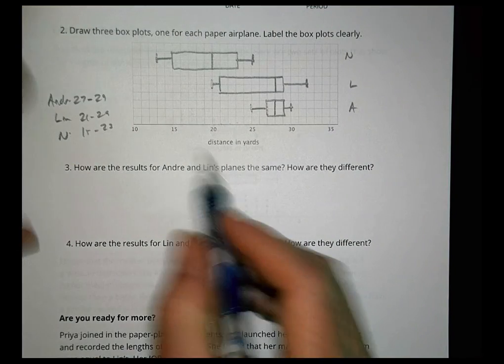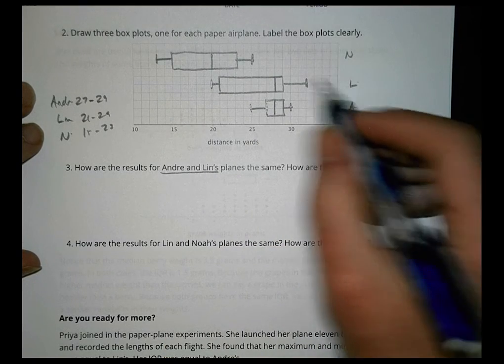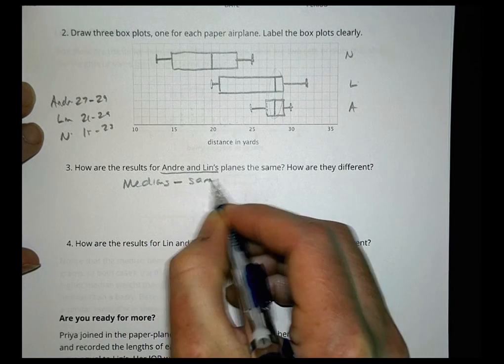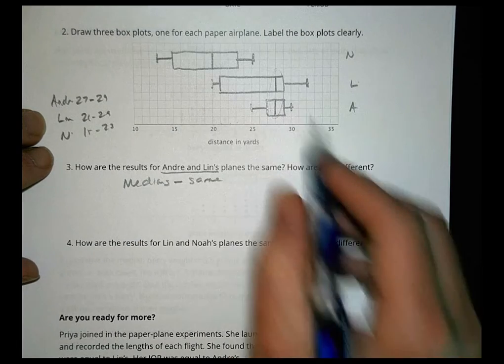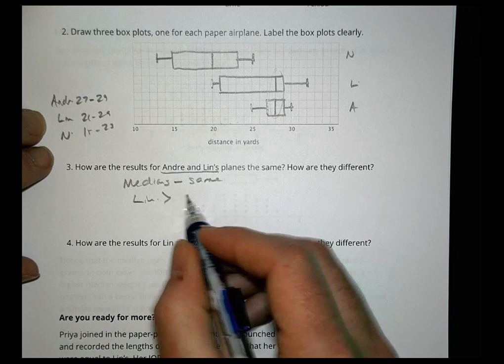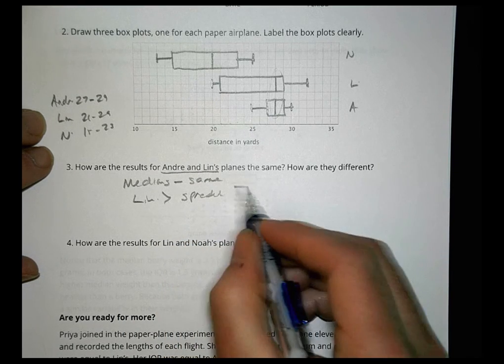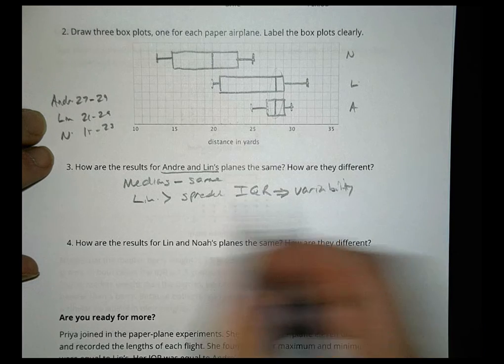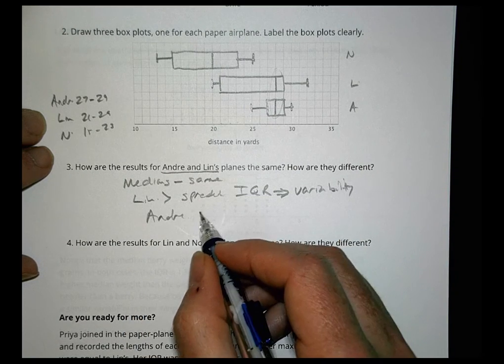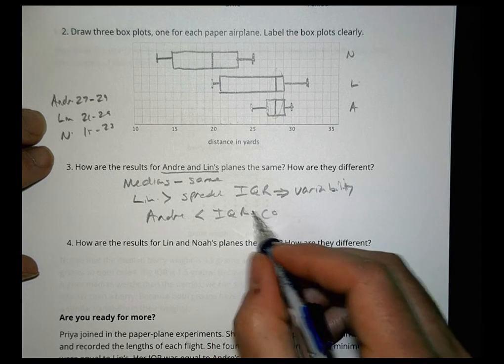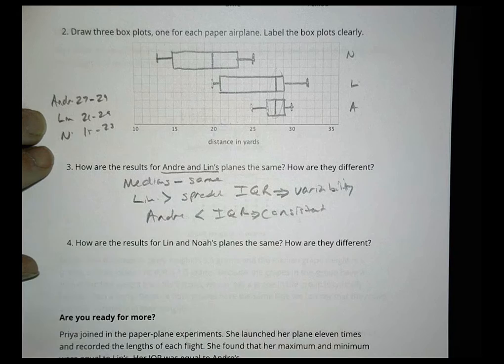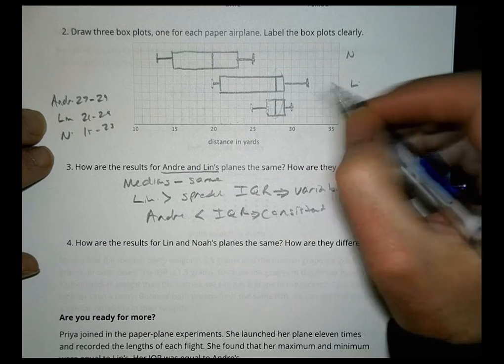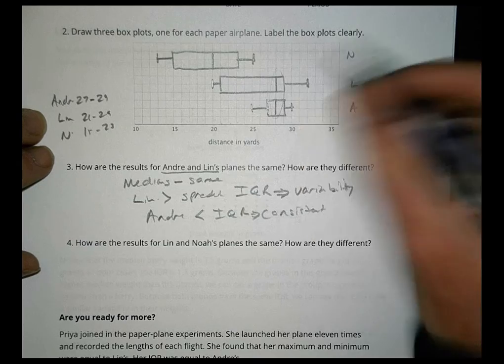So how are the results for Andre and Lynn's planes the same? So Andre and Lynn's planes. Well, a couple of things we see is that they have the same medians. The medians are the same. In terms of how they're different, we can see that Lynn had a greater spread or a greater, what we call it, the IQR. Which means he had more variability. That means that for Andre, he had a smaller IQR. So he was more consistent. So while their means are the same, and the medians are the same, Andre is much more consistent because this has less of an IQR. The box is smaller. The values were all in that area there. Lynn had a lot of lower ones.